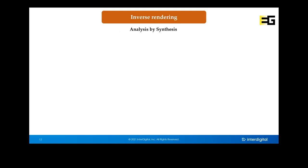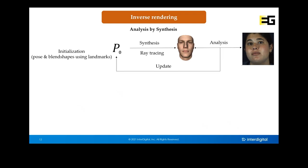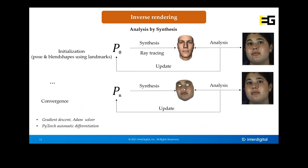Now that we have defined our parametric face model, we formulate an inverse rendering problem: given an input image, we want to find the optimal set of parameters P that best describes the input image. We start from an initial configuration P0, initializing head pose and blend shapes using detected landmarks. We then generate a synthetic image which is compared to the input image to calculate a loss function. We use gradient descent from PyTorch in an iterative optimization process, adding increments to minimize the error over a number of iterations.